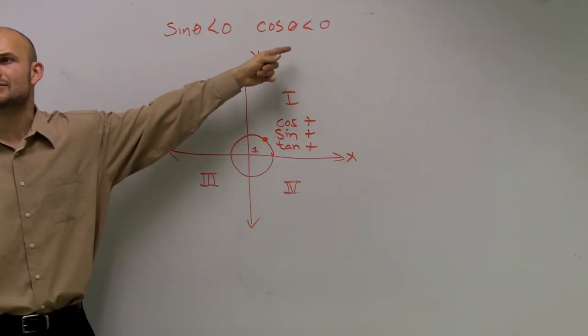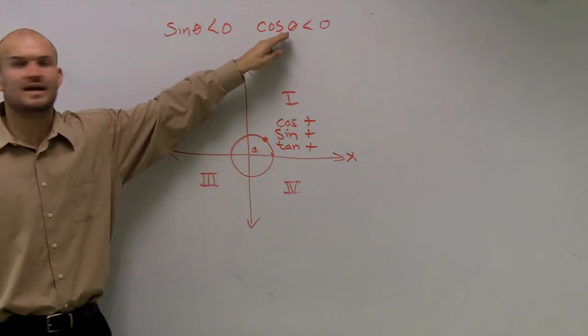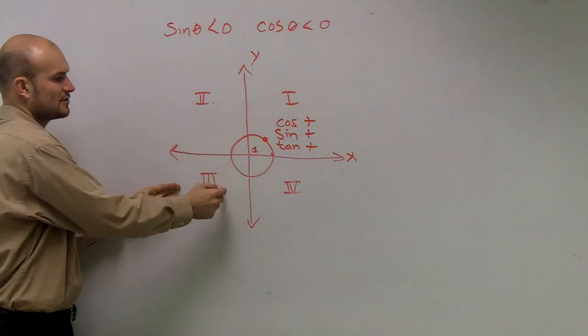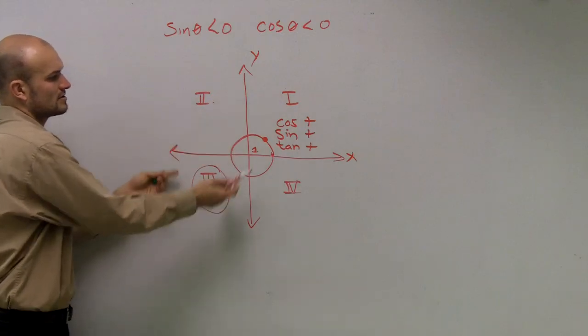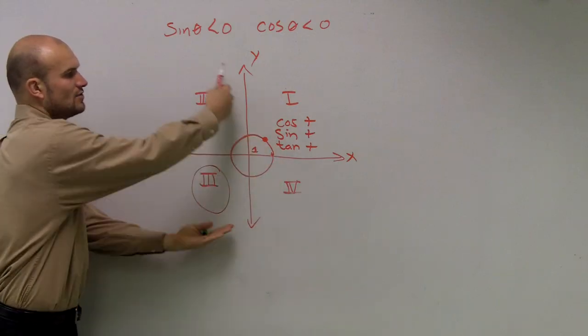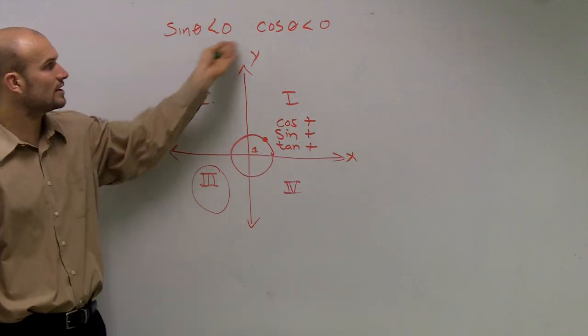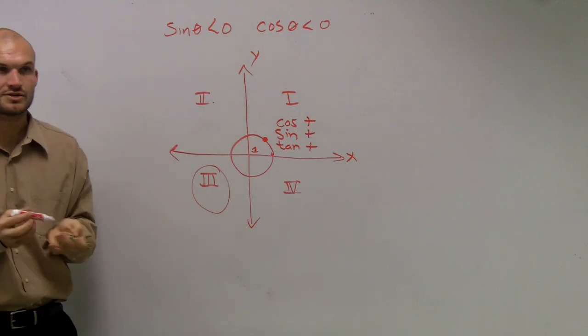Then, the cosine, can you please watch your language, cosine of theta is going to be less than zero. So when is cosine negative? Well, that's in the second and the third quadrant. So, sine is negative in these two. Cosine is negative in these two. Therefore, the quadrant, one of these two constraints, is going to be quadrant three.